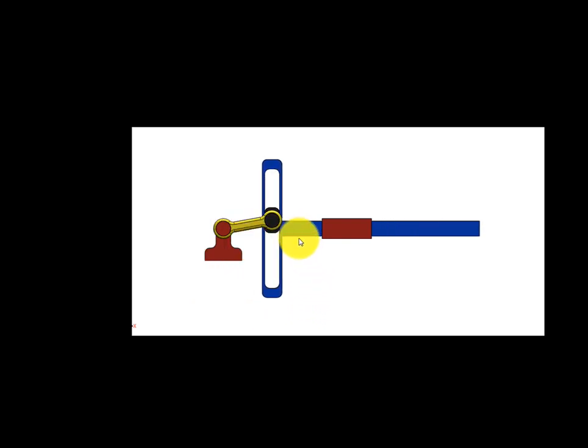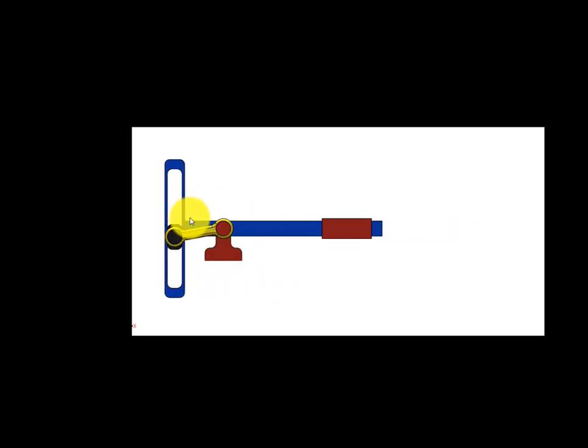Then this blue color link is the slotted lever and the link which is shown by this black color is the slider. So here you can see that the rotary motion of the crank is being converted into the reciprocating motion of the slotted link.